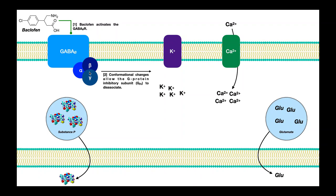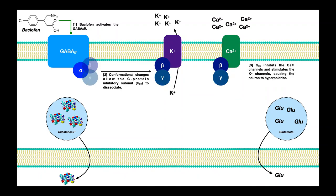G proteins have three subunits: alpha, beta, and gamma. The alpha subunit is excitatory, whereas the conglomerate of beta and gamma is the inhibitory subunit. Once baclofen binds to this receptor, the inhibitory subunit is allowed to dissociate. There are many GABA-B receptors, so there are many inhibitory subunits. These inhibitory subunits bind to a number of proteins, but the two relevant ones are the voltage-gated channels. First, the inhibitory subunit binds to the voltage-gated calcium channel and inhibits it.